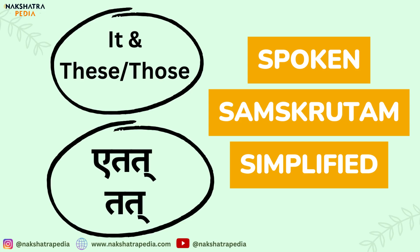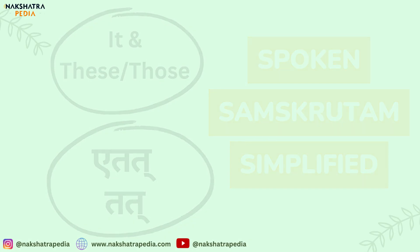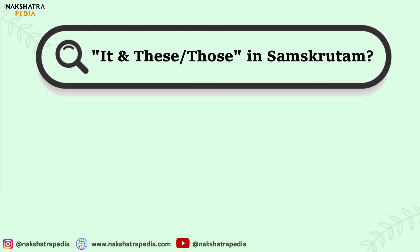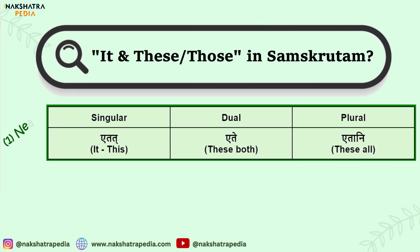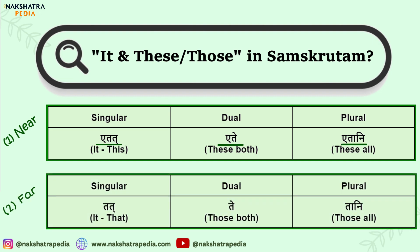We have seen he and she — that is how to speak in Samskritam. Now let's talk about it. We use etat to speak 'it' which is near and tat to speak 'it' which is far. So the near forms are etat, ete, etani, and for far objects we use tat, te, and taani.